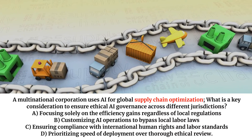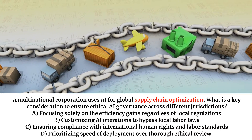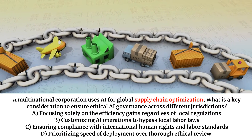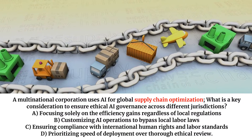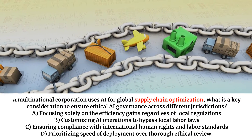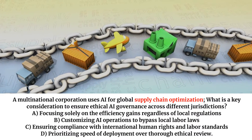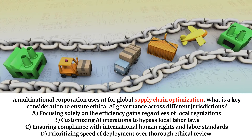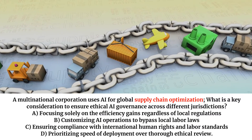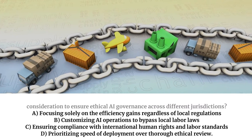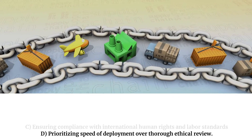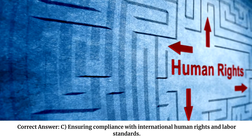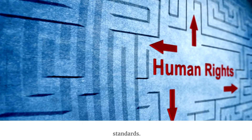A multinational corporation uses AI for global supply chain optimization. What is a key consideration to ensure ethical AI governance across different jurisdictions? A. Focusing solely on the efficiency gains regardless of local regulations. B. Customizing AI operations to bypass local labor laws. C. Ensuring compliance with international human rights and labor standards. D. Prioritizing speed of deployment over thorough ethical review. Correct answer: C. Ensuring compliance with international human rights and labor standards.